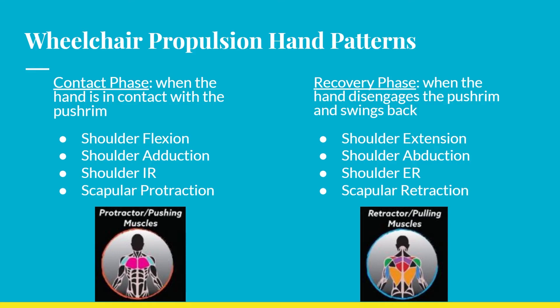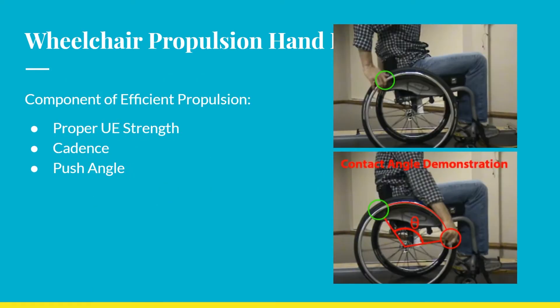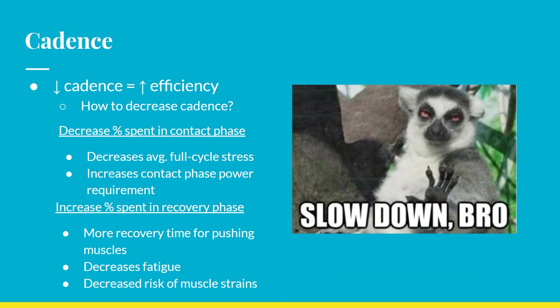Two important components that differentiate propulsion patterns are cadence and push angle. The cadence refers to the frequency of the push cycle. The push angle refers to the arc length on the pushrim between the initial contact point and the release point of the hand. Efficient propulsion typically has a slower cadence, most often achieved by increasing time spent in the recovery phase, which allows more time for the pushing muscles to recover, staving off fatigue and possible muscle strains.